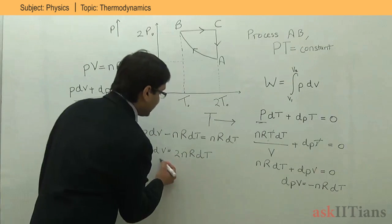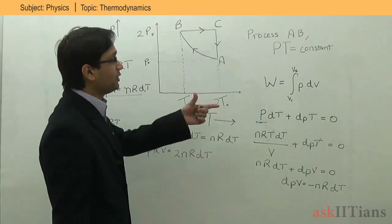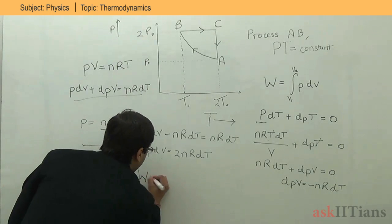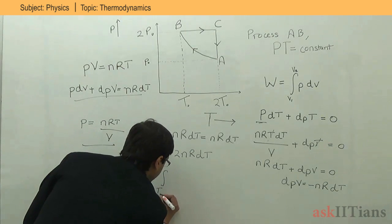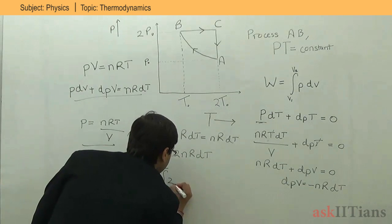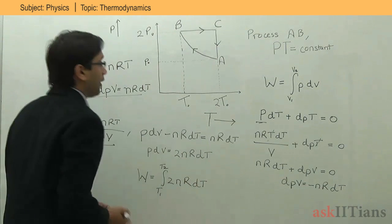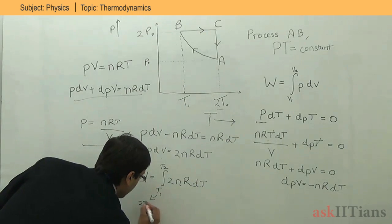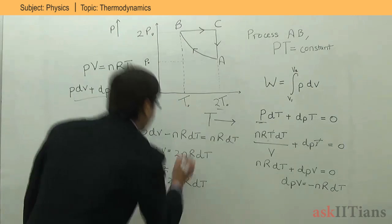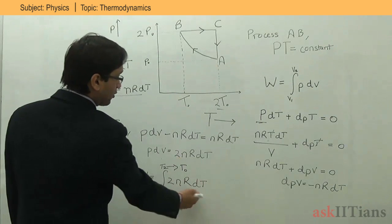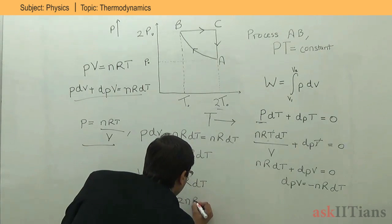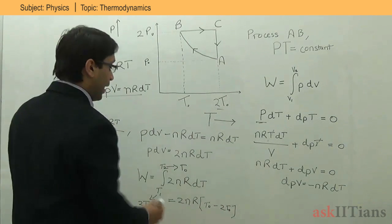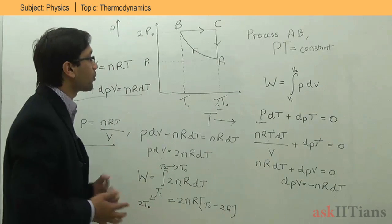This is the P dV expression. Replacing this in the work done formula and changing limits from V1, V2 to T1, T2: W = ∫(T1 to T2) 2nR dT. For process A to B, the initial temperature is 2T₀ and the final temperature is T₀. Integrating gives W = 2nR(T₀ − 2T₀) = −2nRT₀.